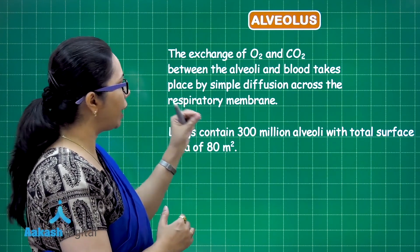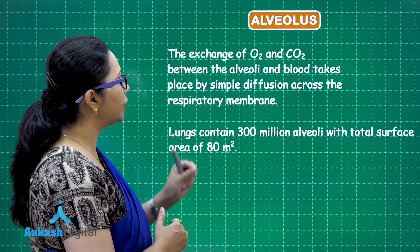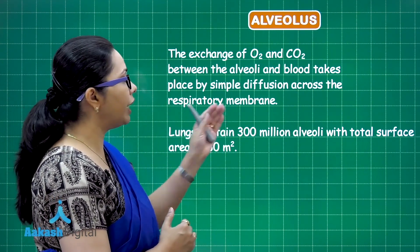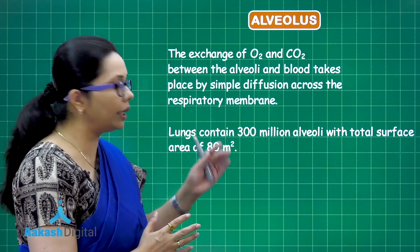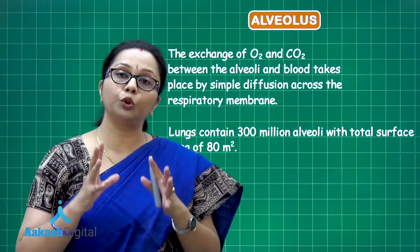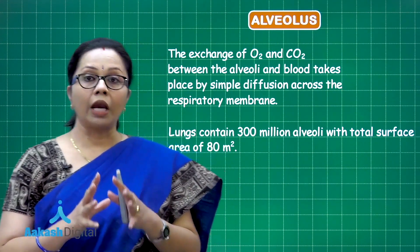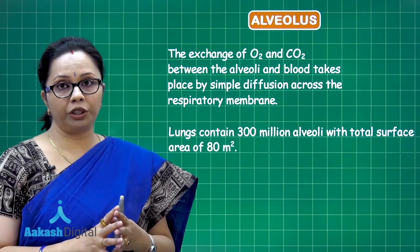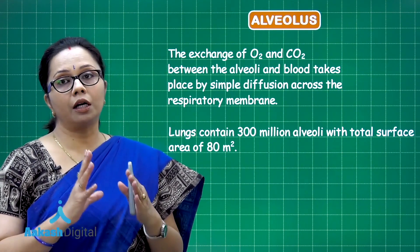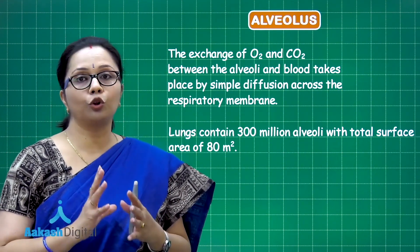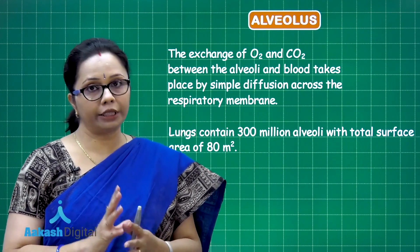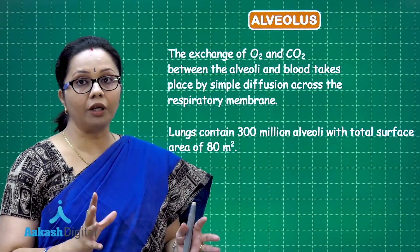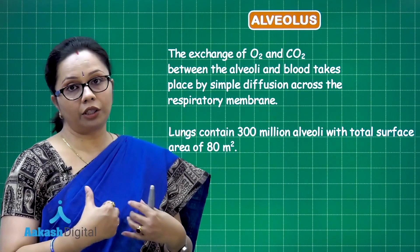We have nearly 300 million alveoli in the two lungs together, and the total surface area is 80 square meters — nearly the area of a lawn tennis court. We can imagine the large surface area available inside the chest cavity where air exchange takes place.